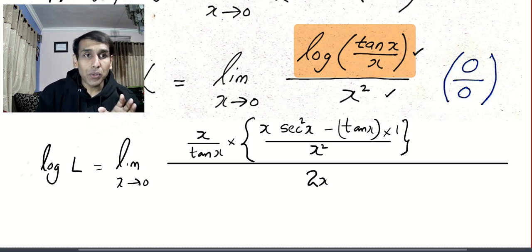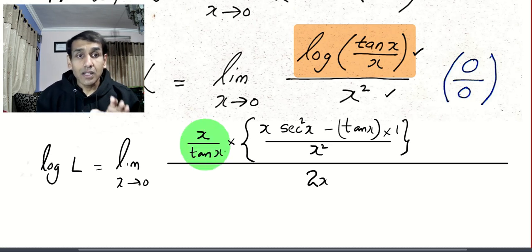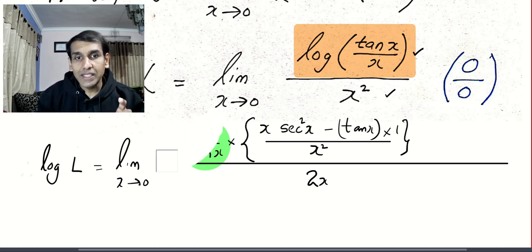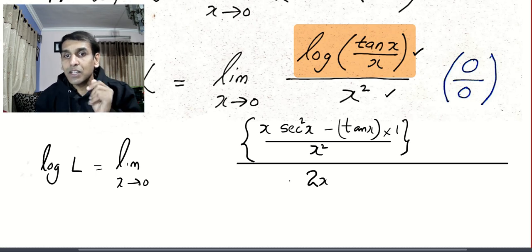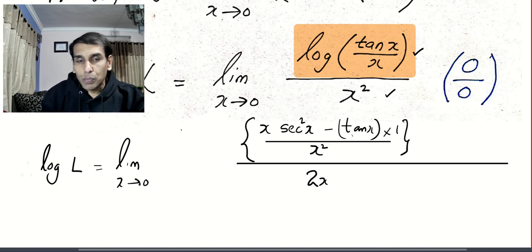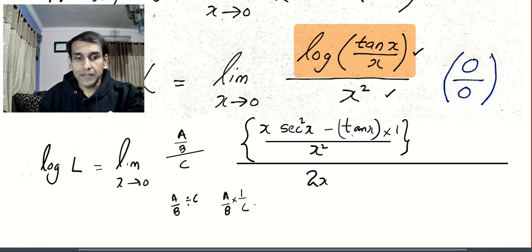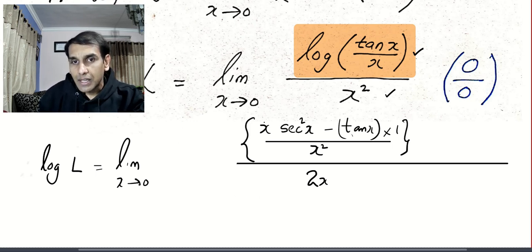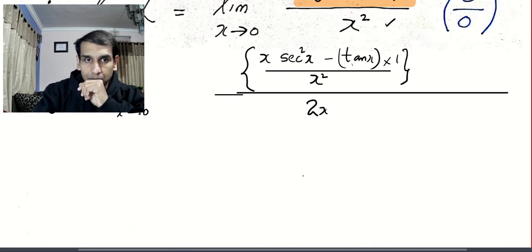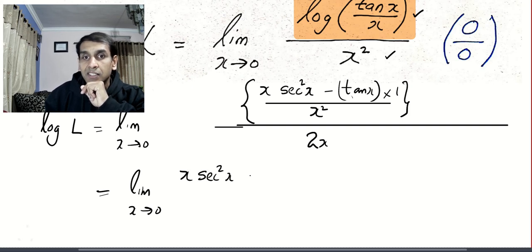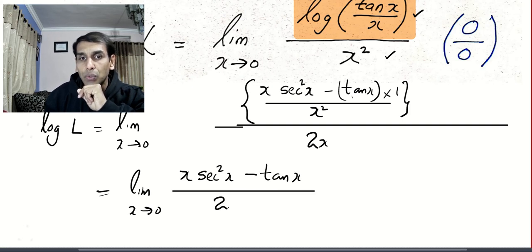I have an advantage here: whenever I get a standard limit connected with another part as a product, I can apply the limit to it. The green part becomes 1 and disappears. Now simplifying: a/b divided by c equals a/b multiplied by 1/c. Using this, I end up with log L equal to x times sec²x minus tan x, all divided by 2 times x cubed.